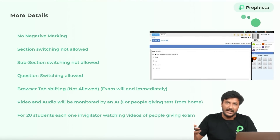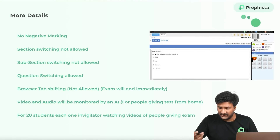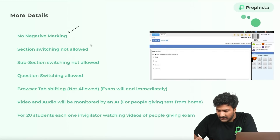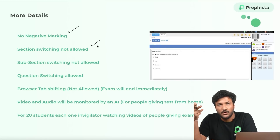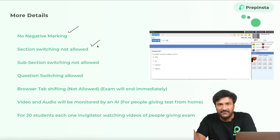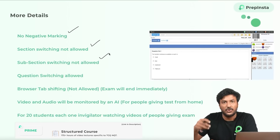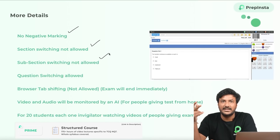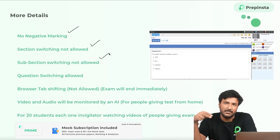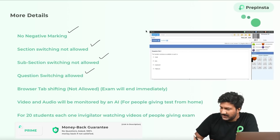A few very important things before we go into the topic-wise syllabus: there is no negative marking. Section switching is not allowed — you cannot go from Part A (Foundation) to Part B (Advanced). Subsection switching is also not allowed, meaning you can't go from logical to verbal or verbal to quants.